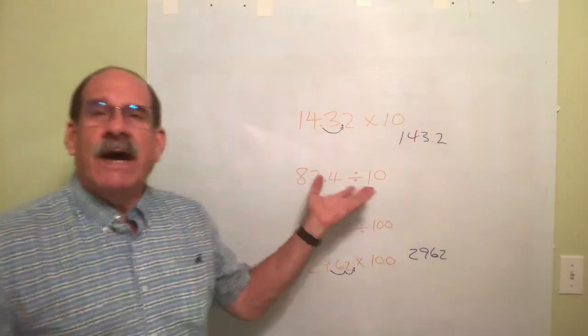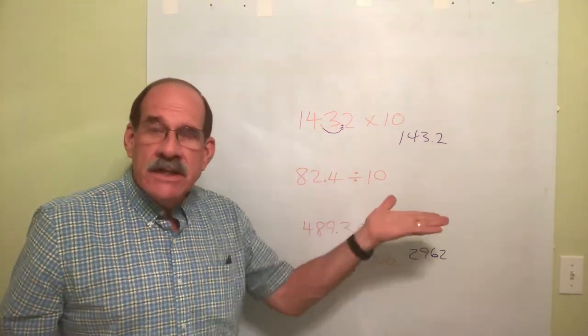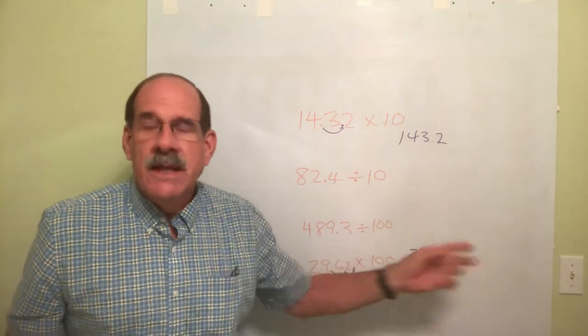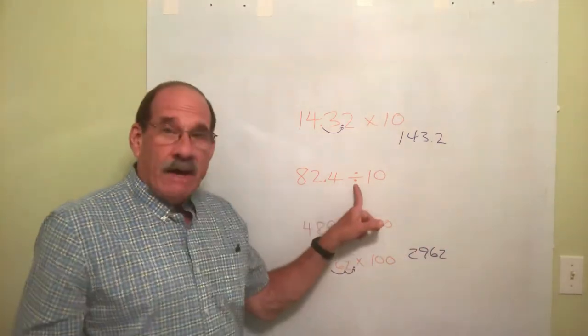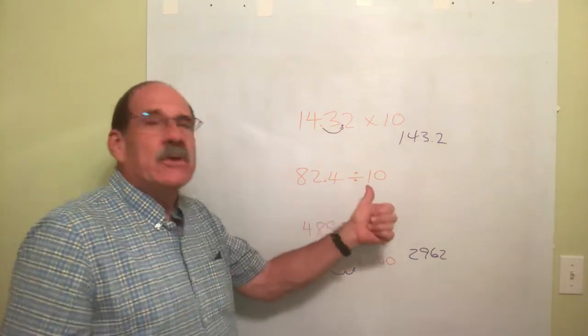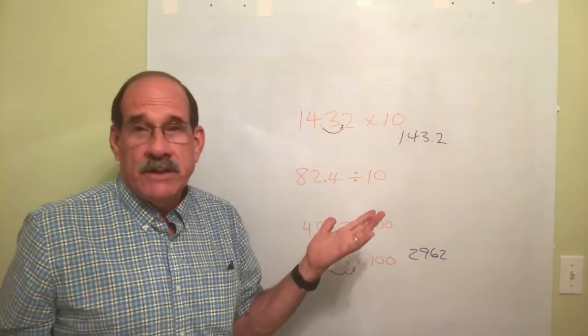What if I divide by the number 10 or 100 or 1,000? Meaning numbers with a one and some zeros after them. When I divide, I move the decimal back to the left, a certain number of places.